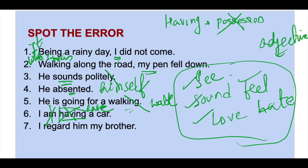'I regard him my brother' — regard is always followed by 'as,' so it should be 'I regard him as my brother.' We will cover this in the adverb chapter. So verb is complete — I have covered all the important things. If you haven't watched verb part 1 and verb part 2, please watch them. Tomorrow we will start with subject-verb agreement. Thank you so much for watching. Bye.